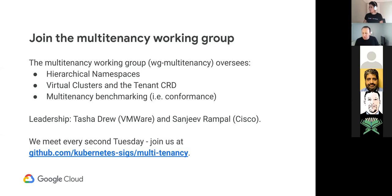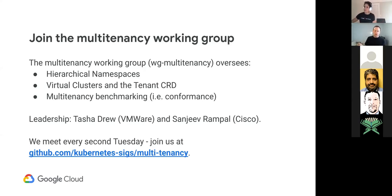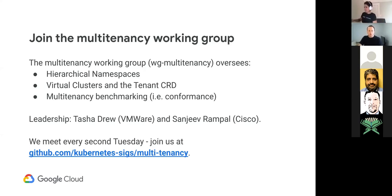Tim Hawken pointed out the thing I forgot to mention, which is that there are new gateway APIs coming online soon, which will get around this limitation and allow you to access services from multiple namespaces. Up until then, you can also use Istio or another service mesh.